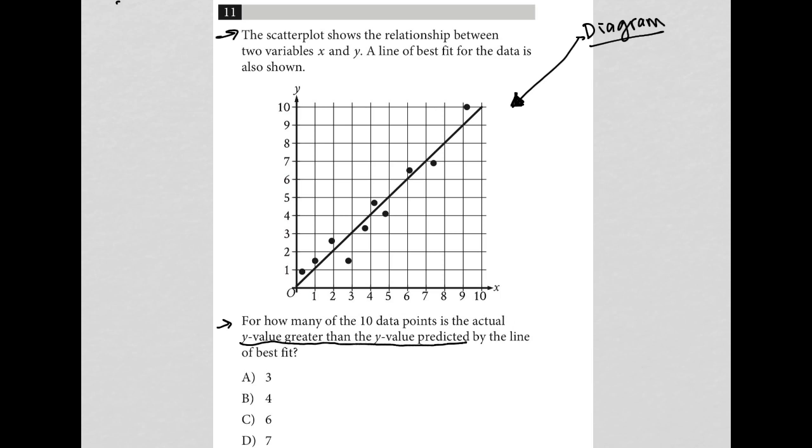Well the y value predicted is the actual line of best fit. So how many of those points are above or greater than the line of best fit?